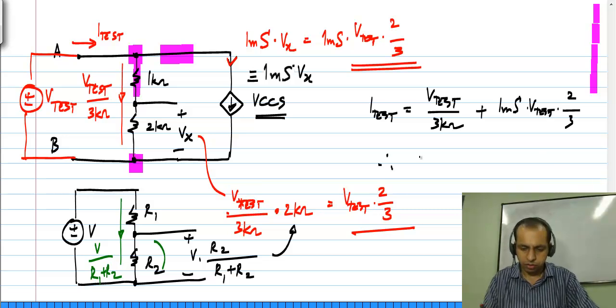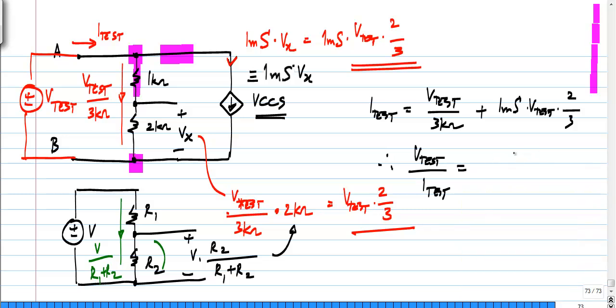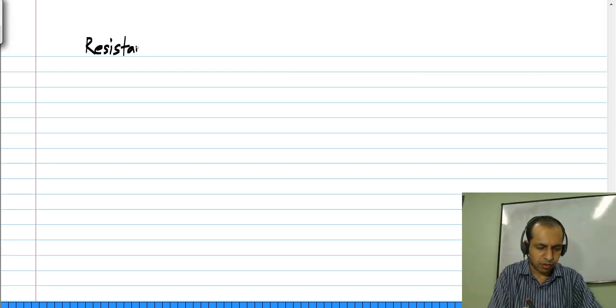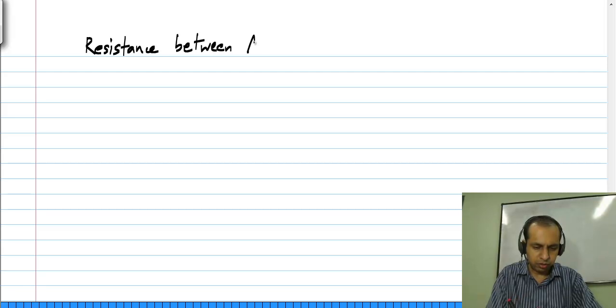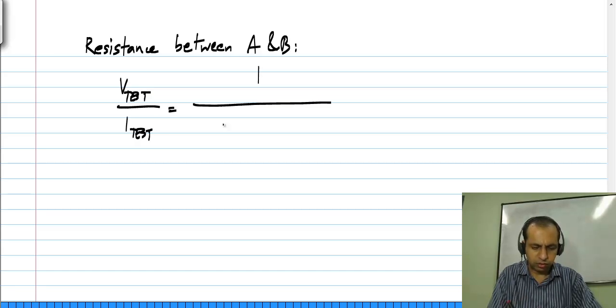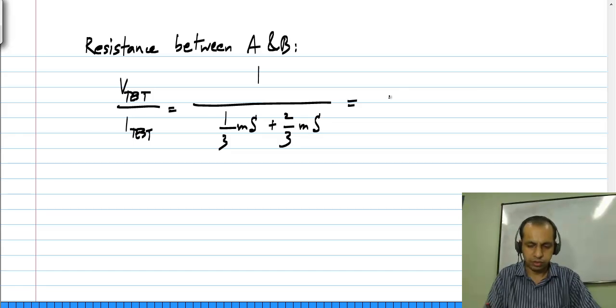I test will turn out to be 1 by 3 kilo ohms plus 1 milli Siemens times 2 by 3, which this part you realize is 1 by 3 milli Siemens. So this is 1 by 3 milli Siemens plus 2 by 3 milli Siemens, which is 1 milli Siemens. So the effective resistance between A and B is V test by I test, which is 1 by 1 milli Siemens, which is basically 1 kilo ohm.